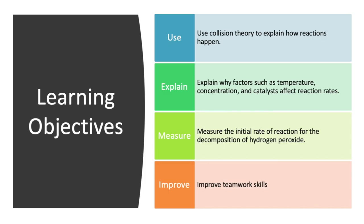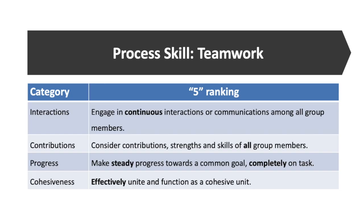Today our learning objectives are to use collision theory to explain how reactions happen, explain why factors like temperature, concentration, and catalysts affect the reaction rates, and we'll justify those explanations using collision theory. In lab, you'll measure the initial rate of reaction for the decomposition of hydrogen peroxide, and you'll also improve teamwork skills — that's our process skill for today.